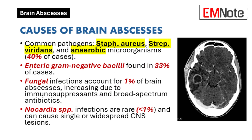Etiology. The most frequently identified pathogens in brain abscesses are Staphylococcus aureus and Streptococcus viridans. Anaerobic microorganisms are present in up to 40% of cases, while enteric gram-negative bacilli are found in up to 33% of cases. The use of immunosuppressants and broad-spectrum antibiotics has led to an increase in fungal-related brain abscesses, which now account for about 1% of cases. Infections caused by Nocardia species are rare, occurring in fewer than 1% of cases, and can manifest as single CNS lesions or as part of a more widespread infection.